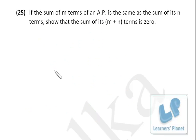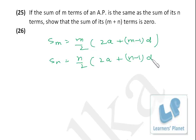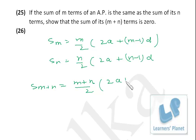Next problem: if the sum of m terms of an AP is the same as the sum of its n terms, show that the sum of its (m+n) terms is 0. Sum of m terms: S_m = (m/2)[2a + (m−1)d]. Sum of n terms: S_n = (n/2)[2a + (n−1)d]. We need to prove S_(m+n) = (m+n)/2 × [2a + (m+n−1)d] = 0.